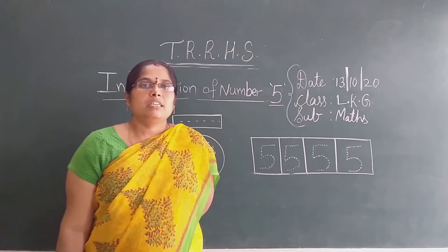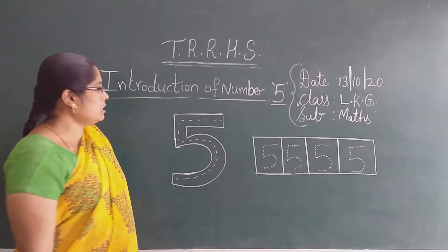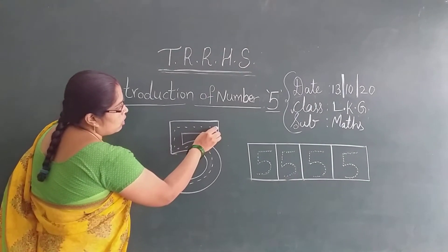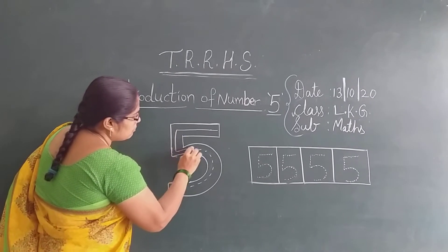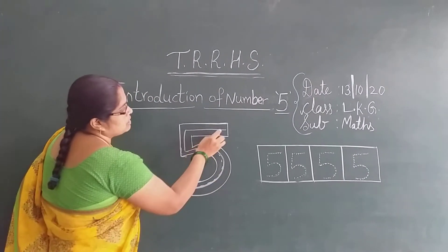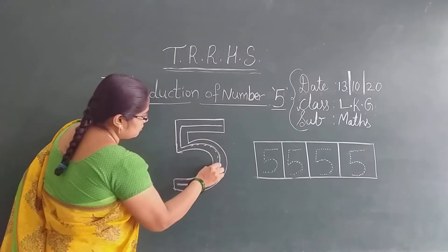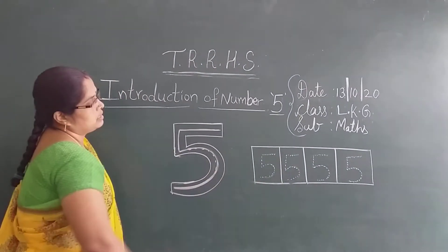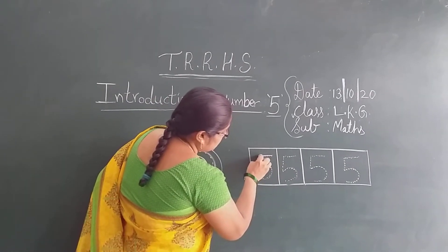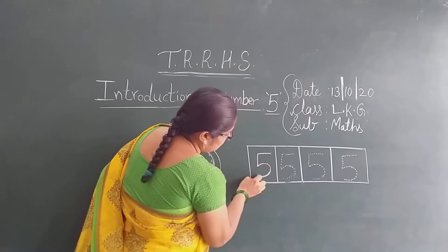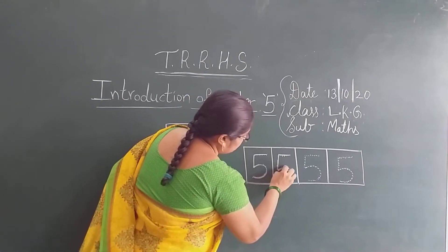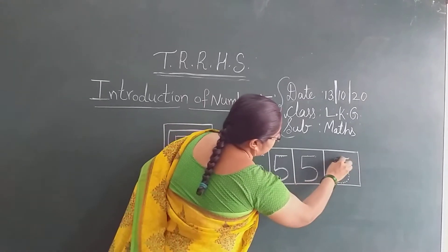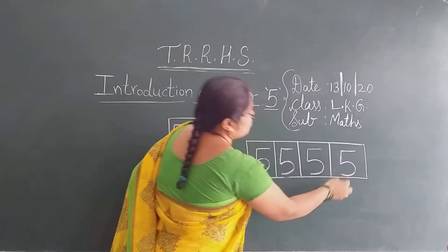Already we learnt. Again, I will explain you. Look at the board children. How to write the number 5 on dots. Look at here. You have to write the number on dots. Learn and write the number 5. Which number? 5. Like this, we have to write like this. Number 5. Now look at here. Learn and write the number 5. You have to write like this.